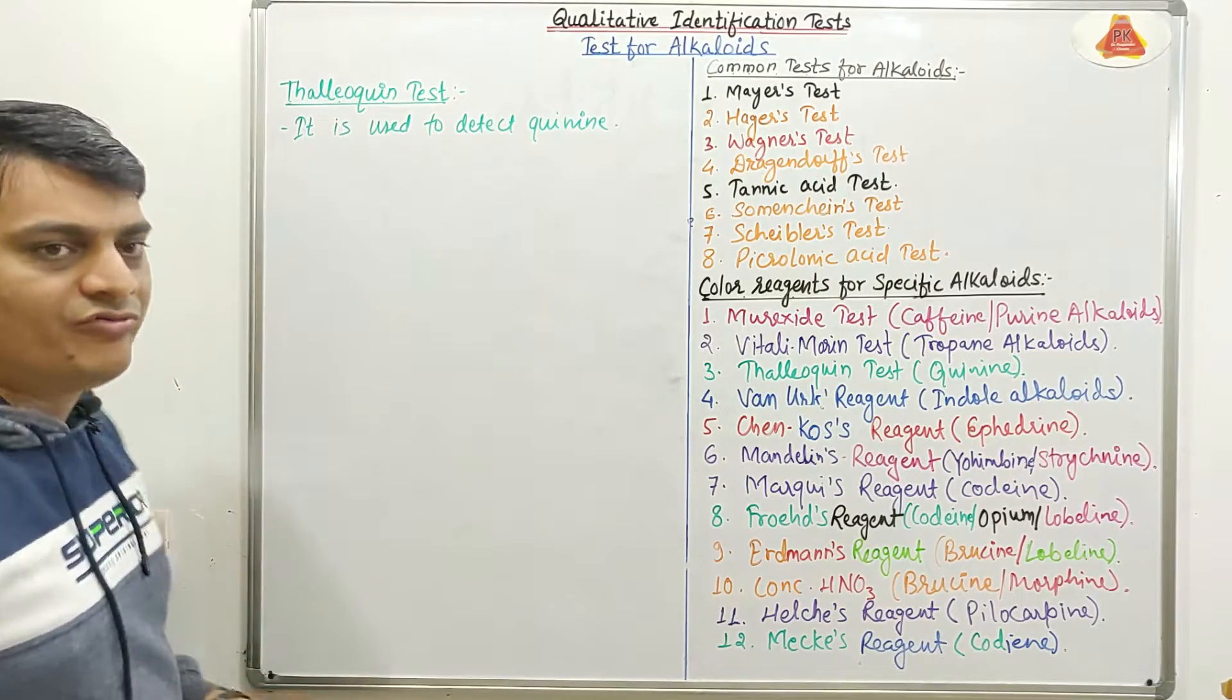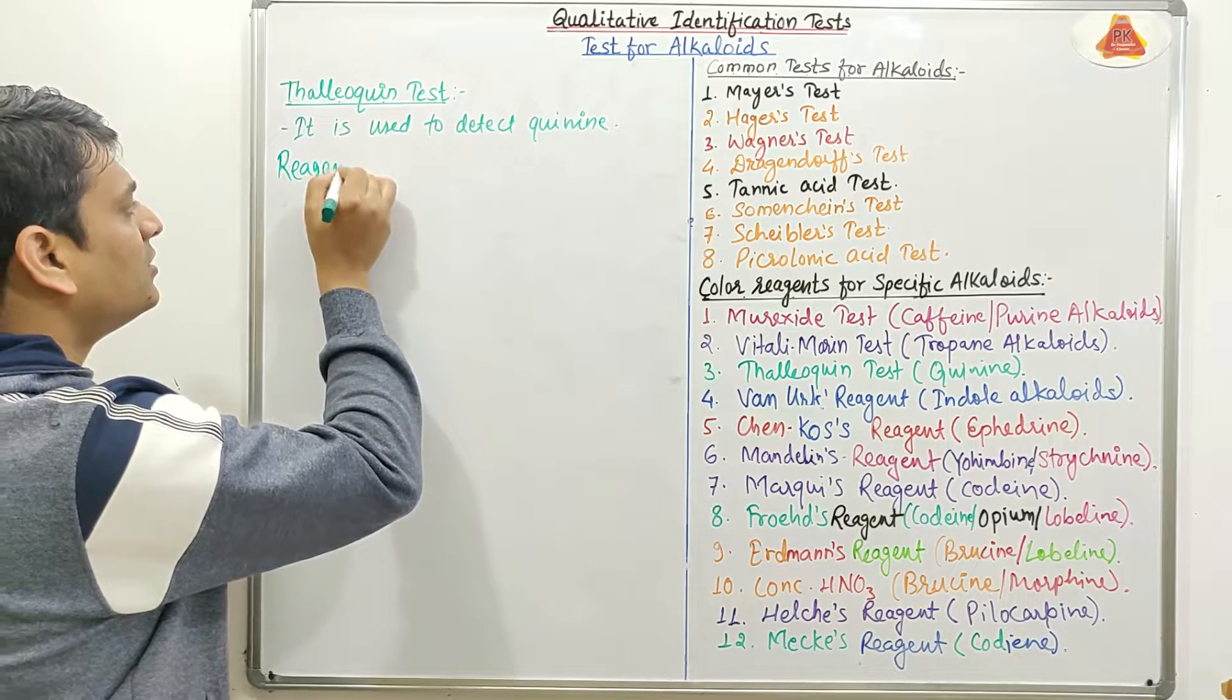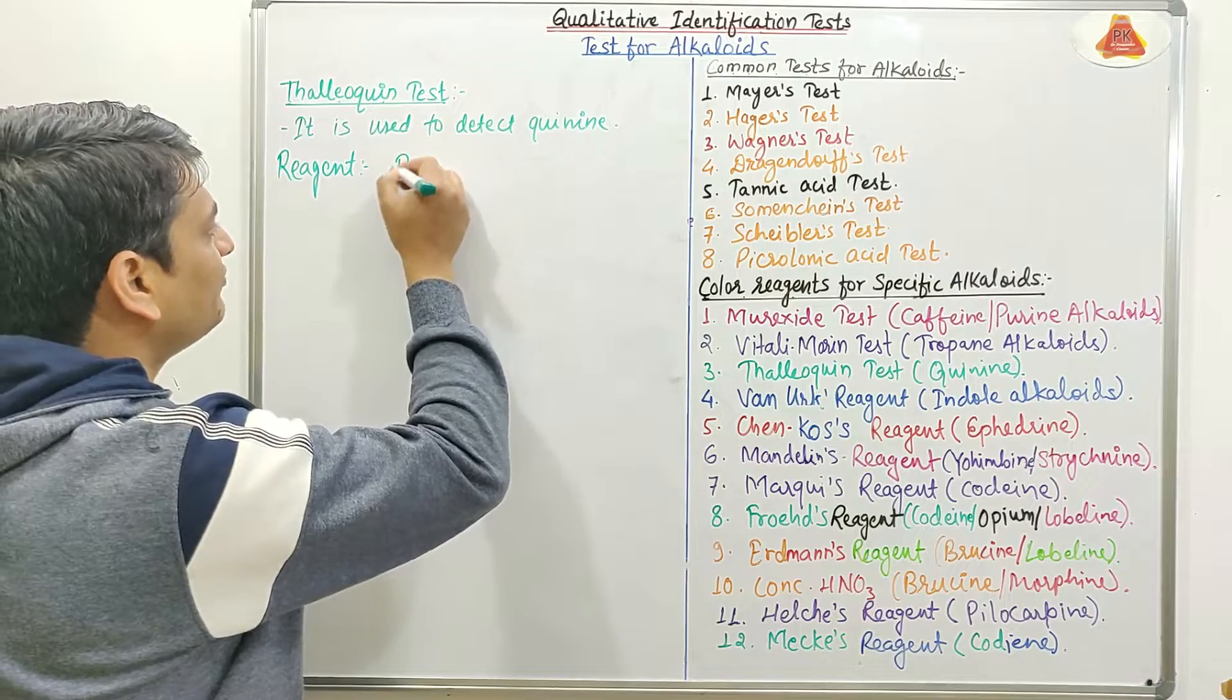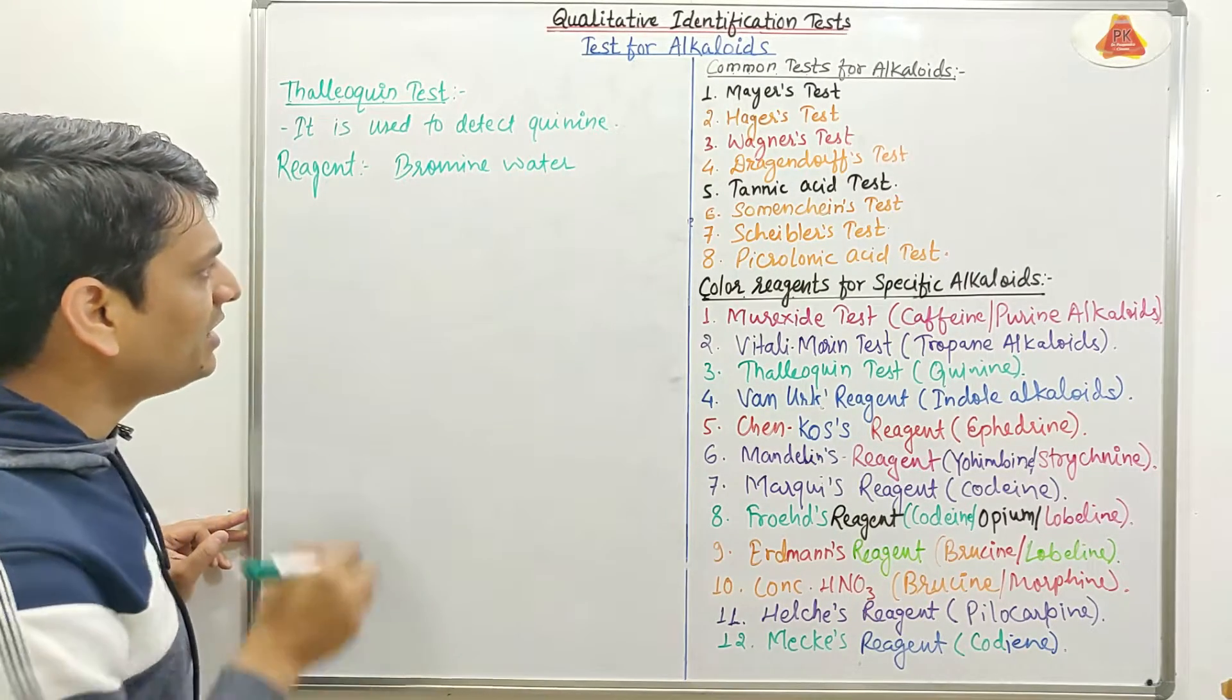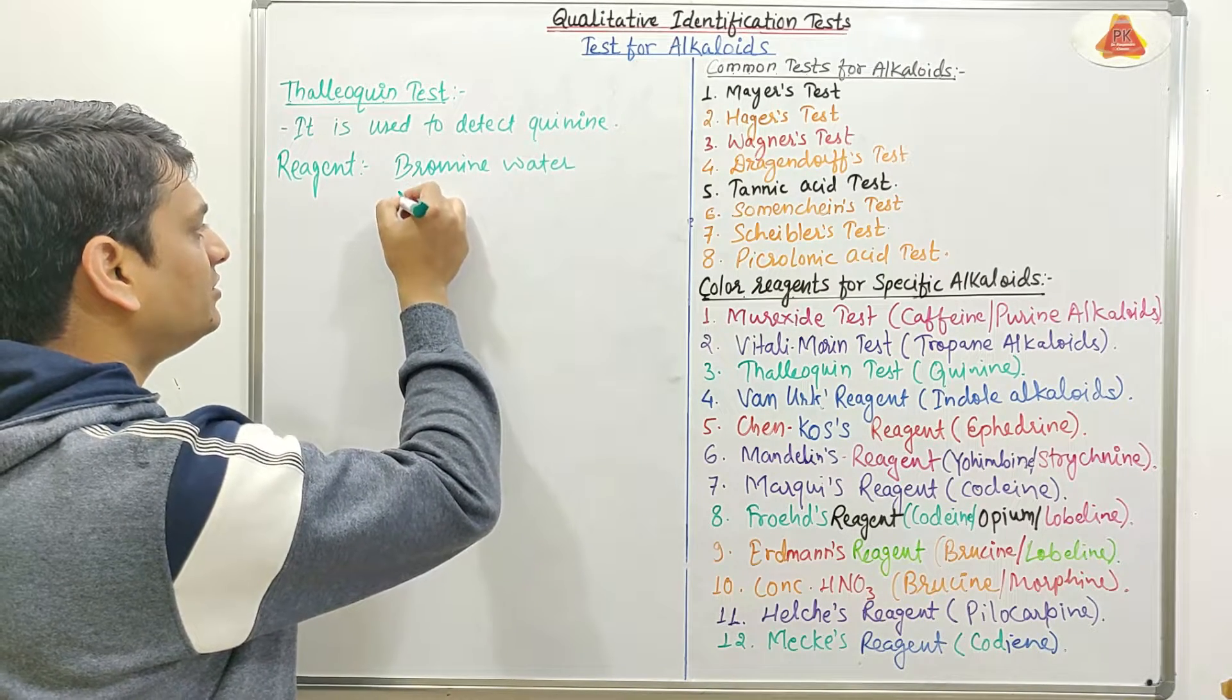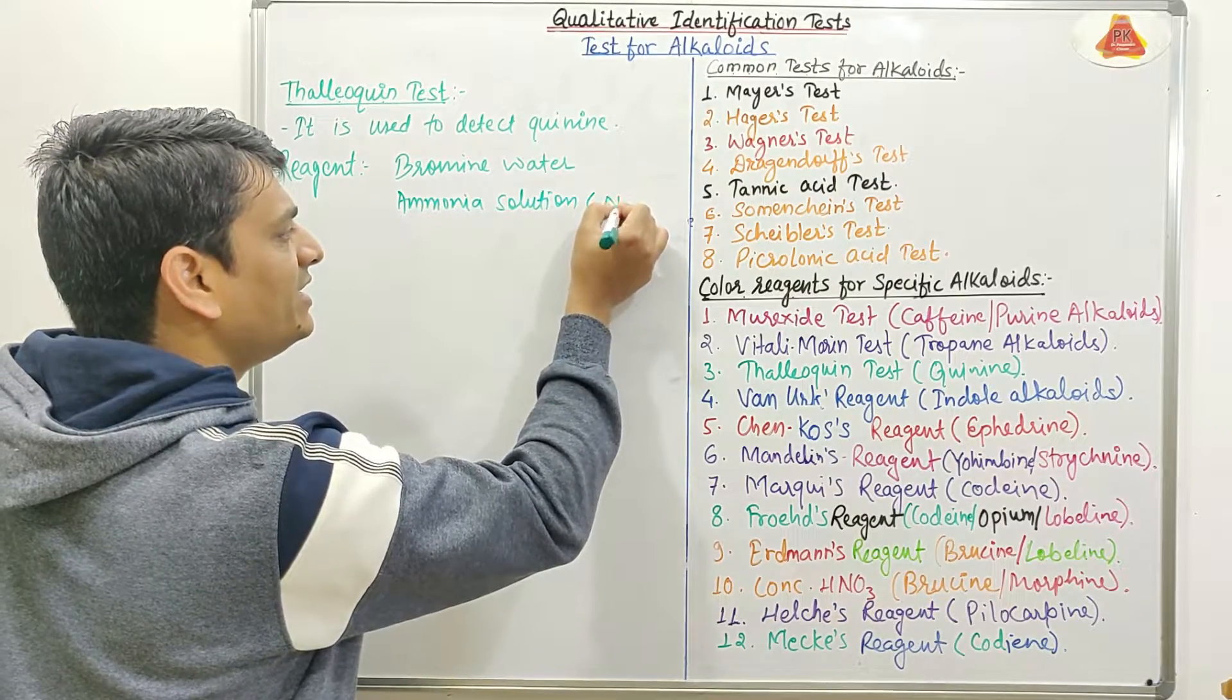This Thaliokine test is used to detect quinine. Now coming to the reagents. In the Thaliokine test, we use Bromine water. The second chemical which will be used for detection of quinine is Ammonia solution, that is NH3.